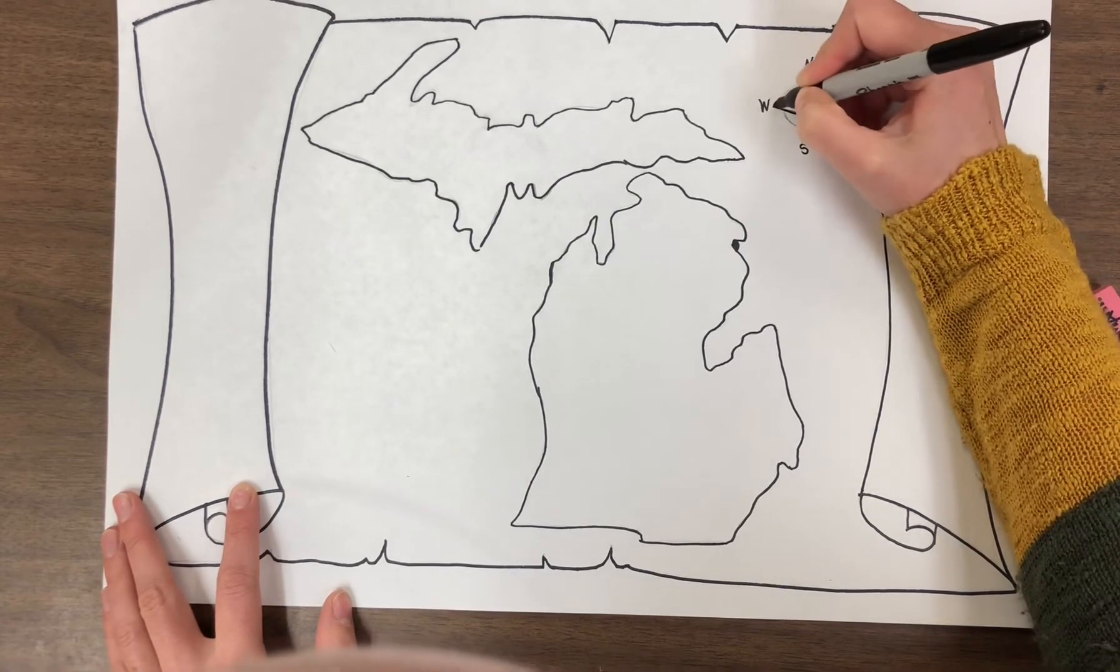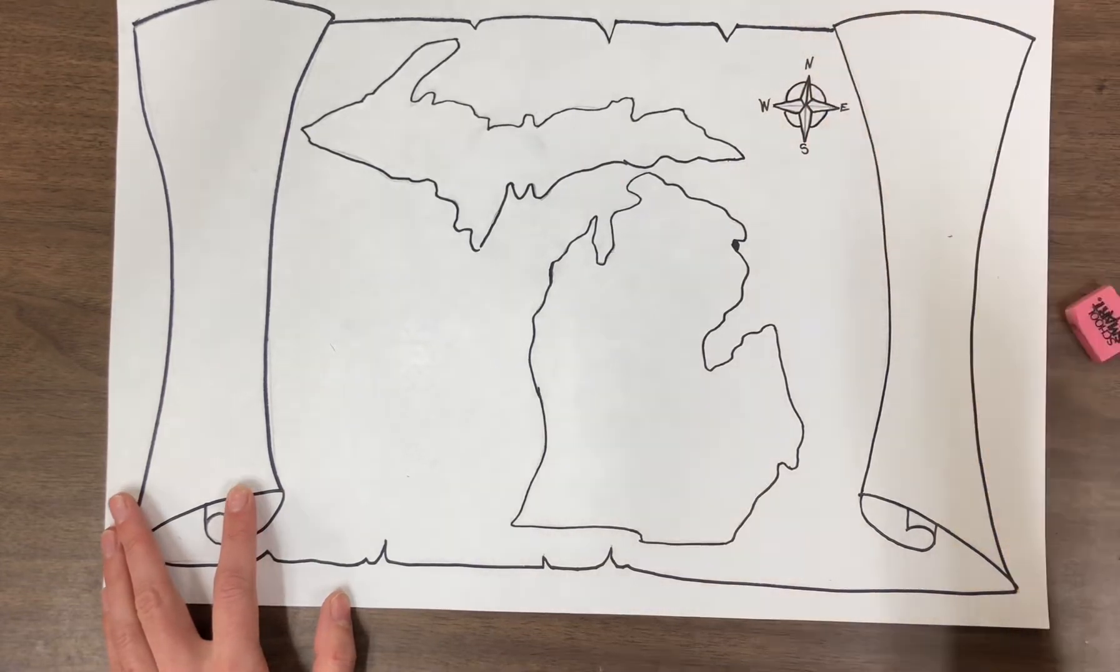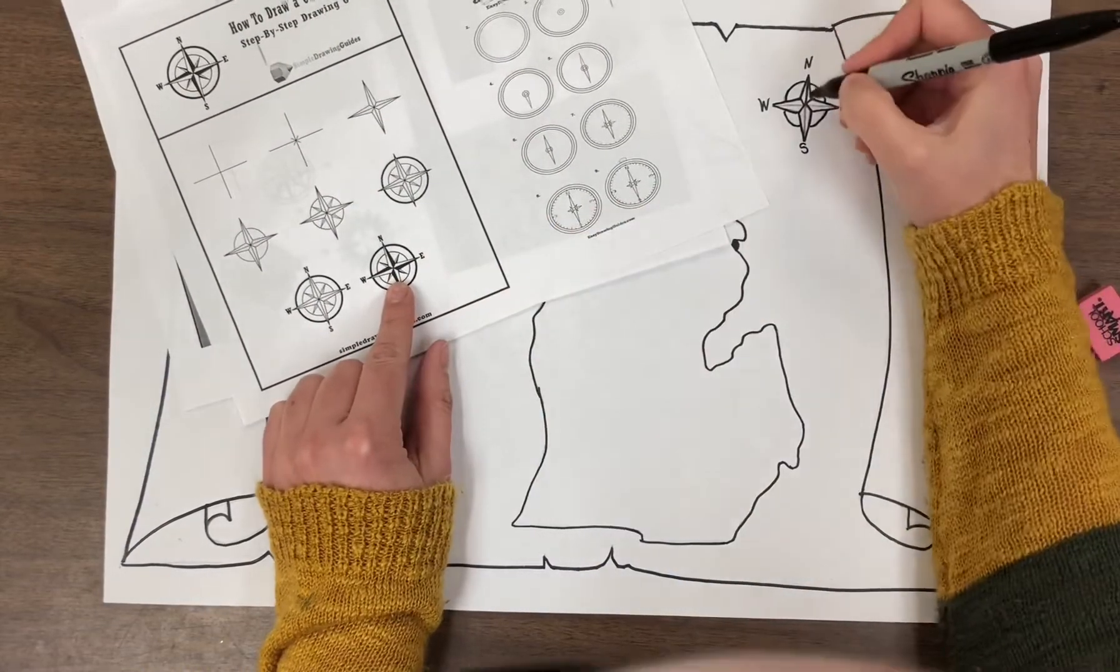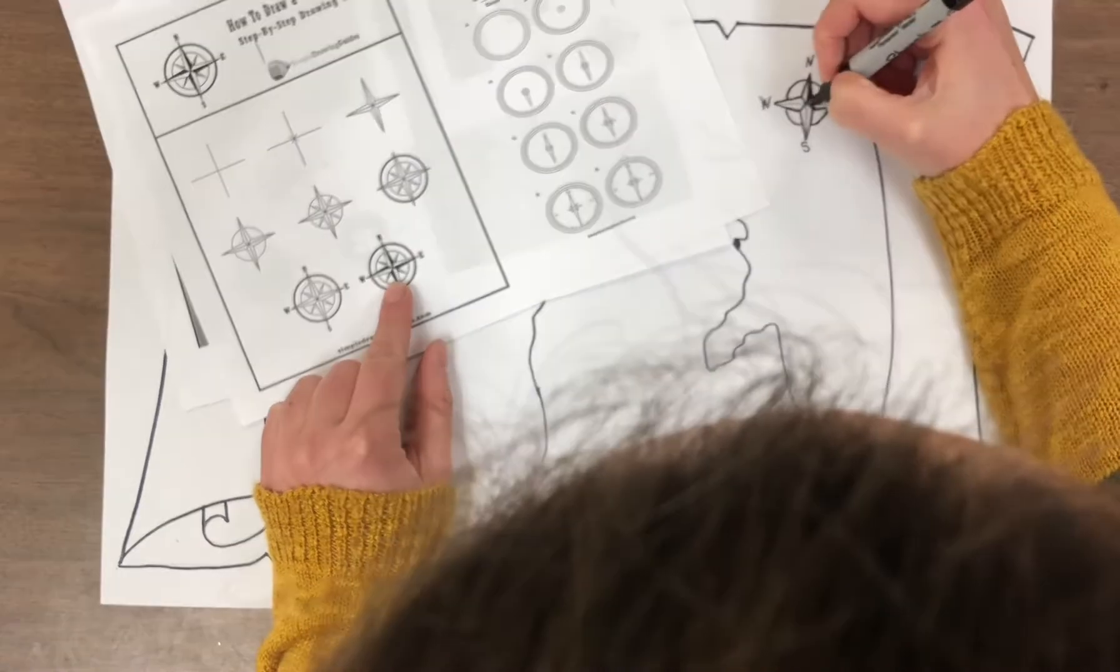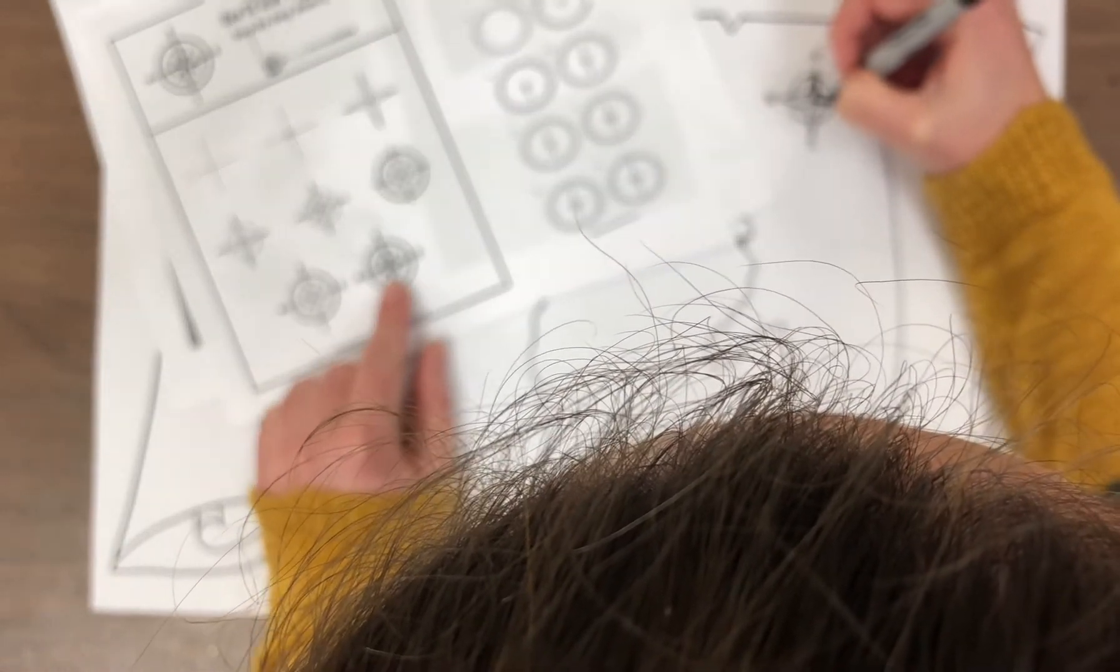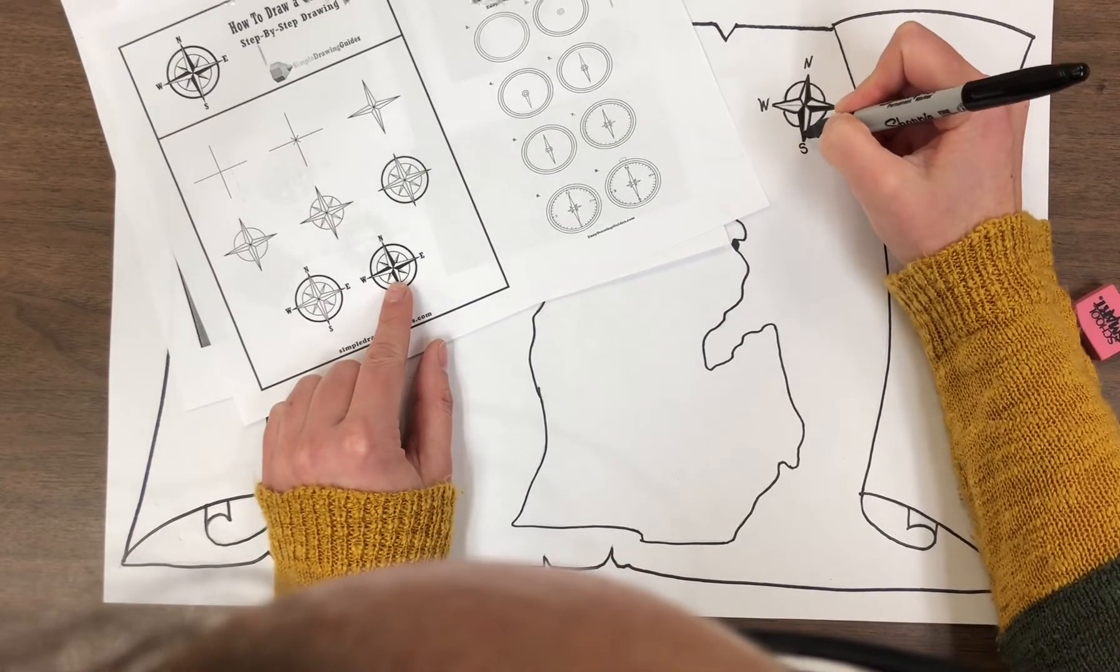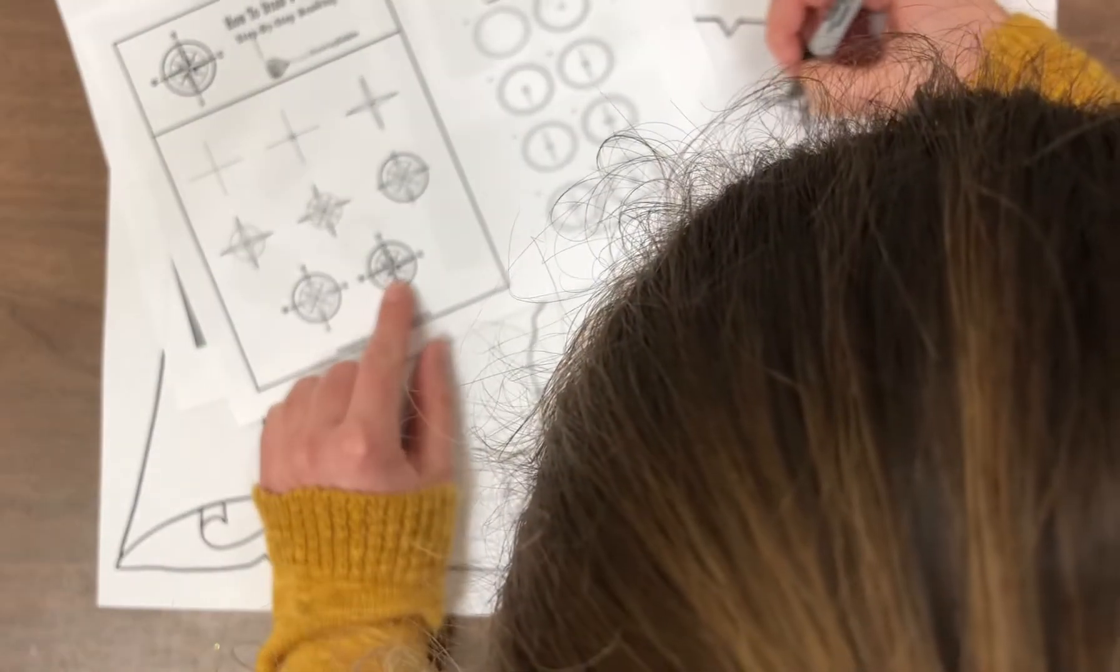When I sharpie this too, I can also add that detail of the one side of the, how this one has the one side of the star colored in. But I'm going to make sure I color each of the same side. So always on the same side colored in or shaded in, I should say something like that.